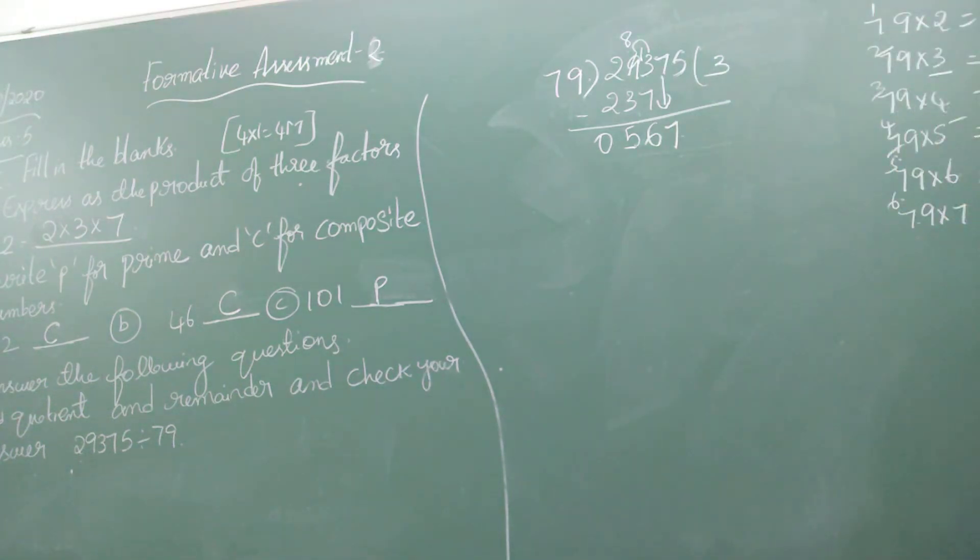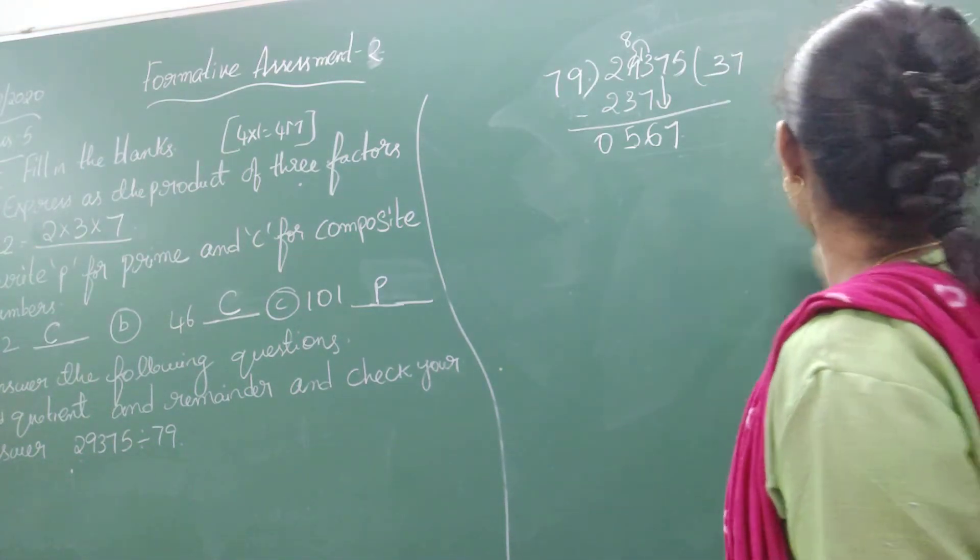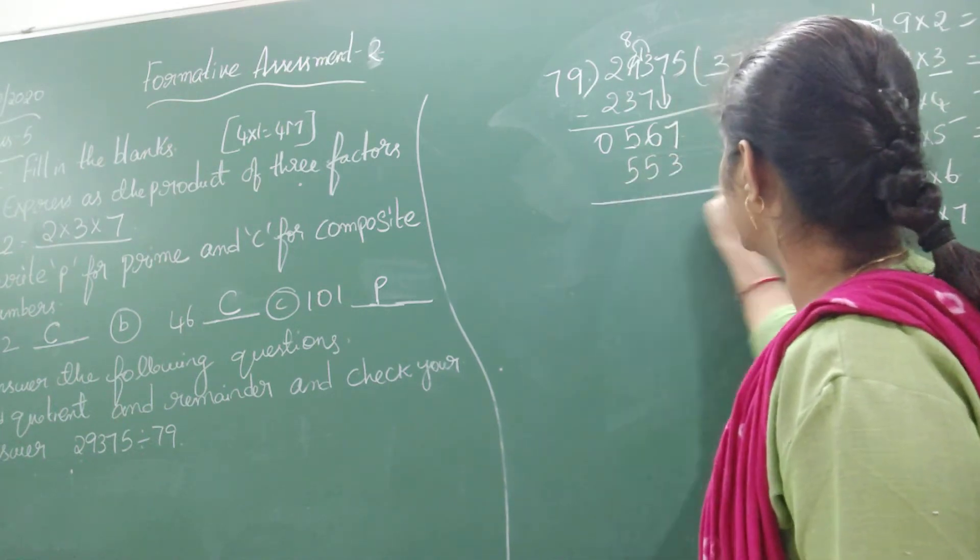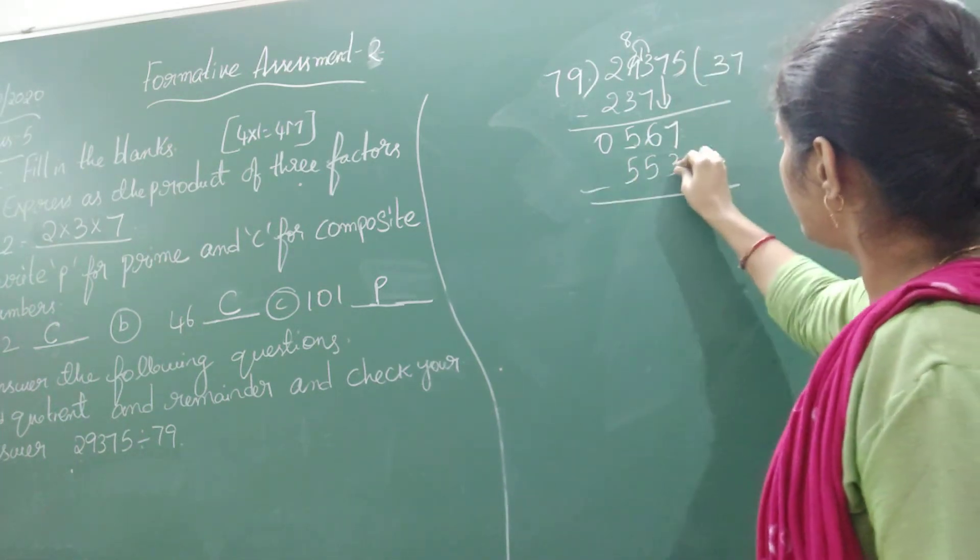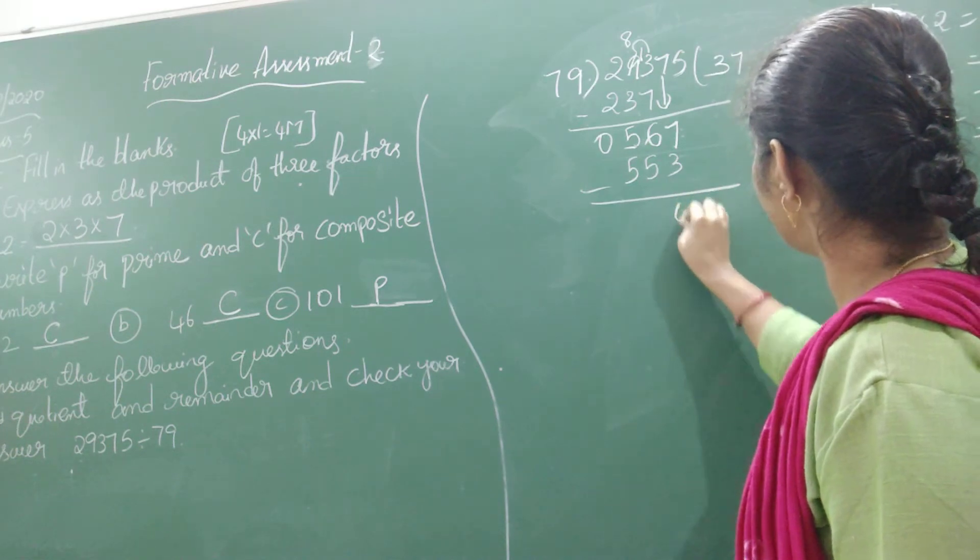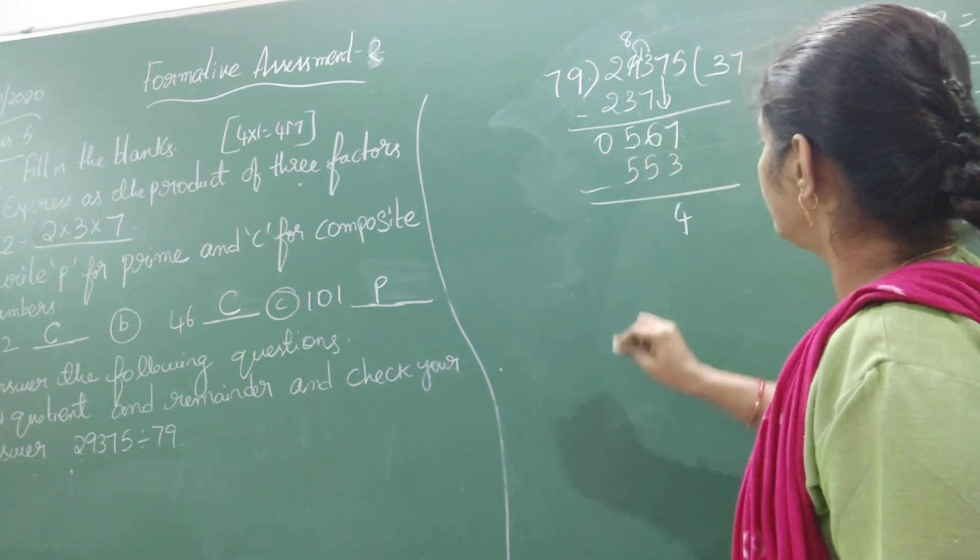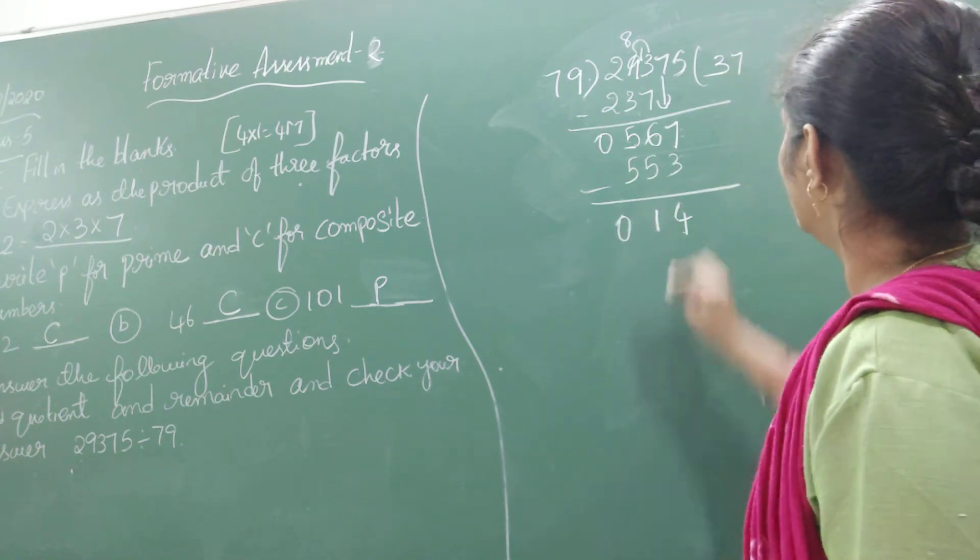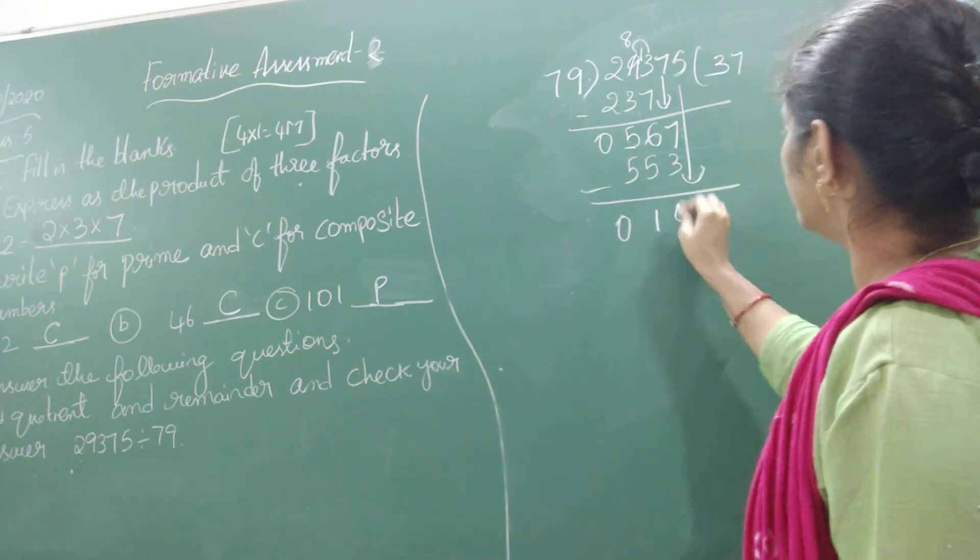Now drop the next number, that is 7. Let us check if it is possible. 79 times 8 will be more than this, so we need to go with 79 times 7, which is 553. Subtract: 7 minus 3 is 4, 6 minus 5 is 1, 5 minus 5 is 0.